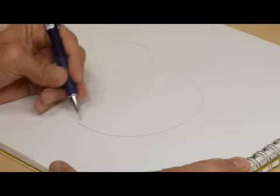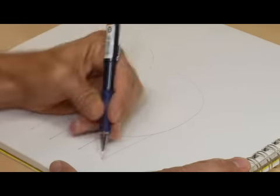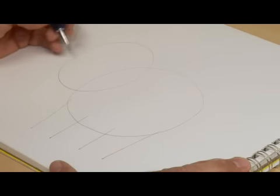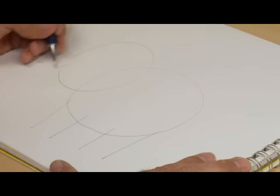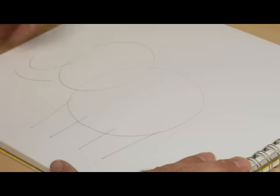Four legs, one, two, three, four. A trunk which comes out from the head. Two half circles are more than sufficient.